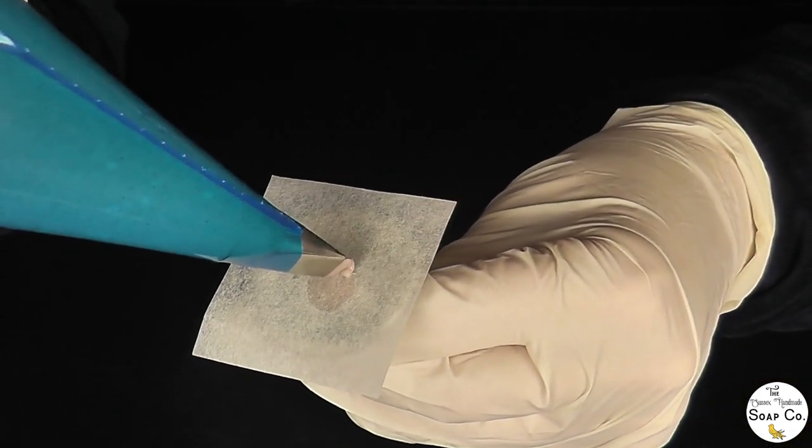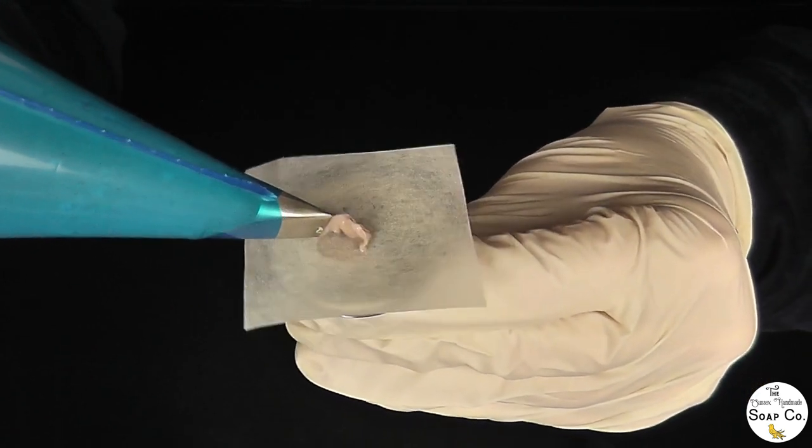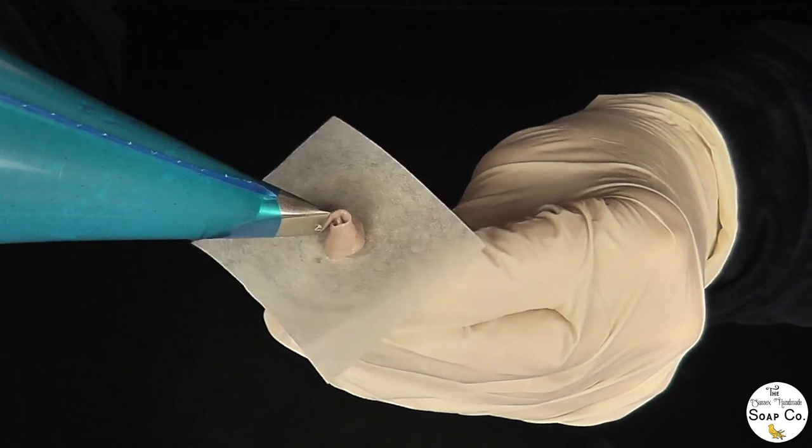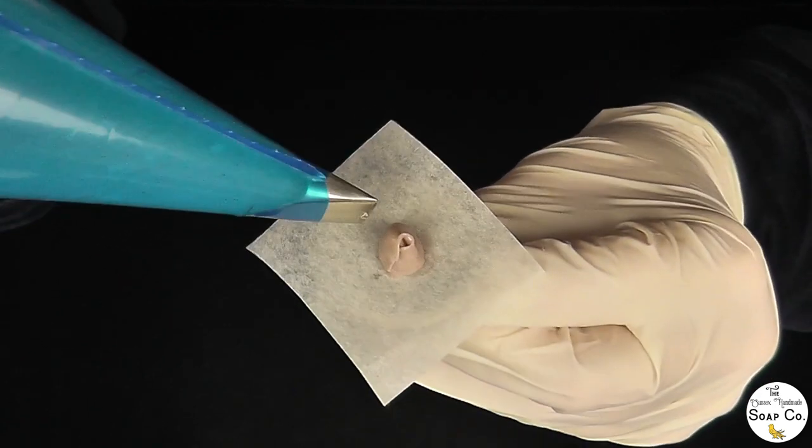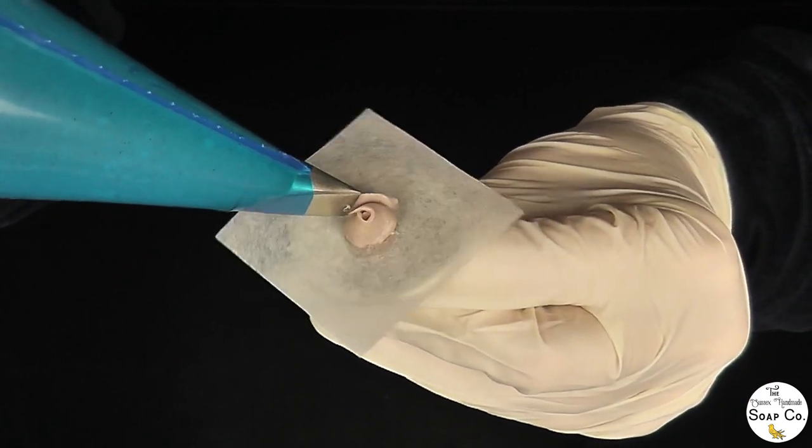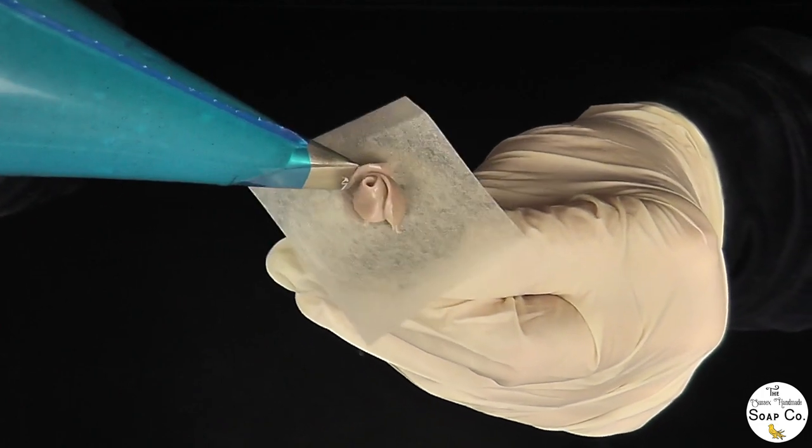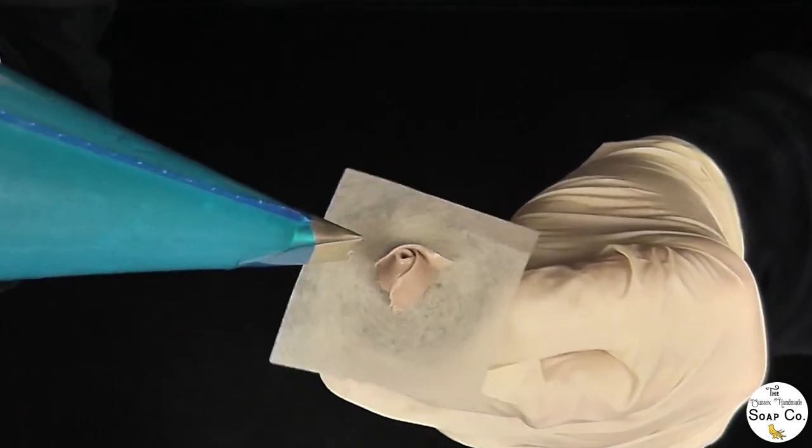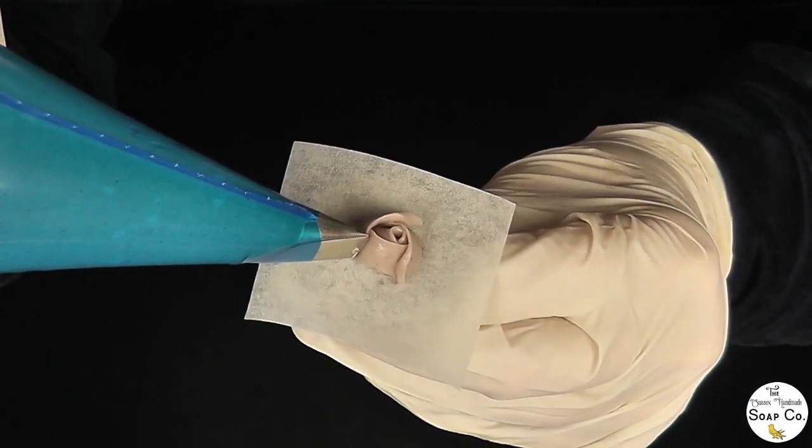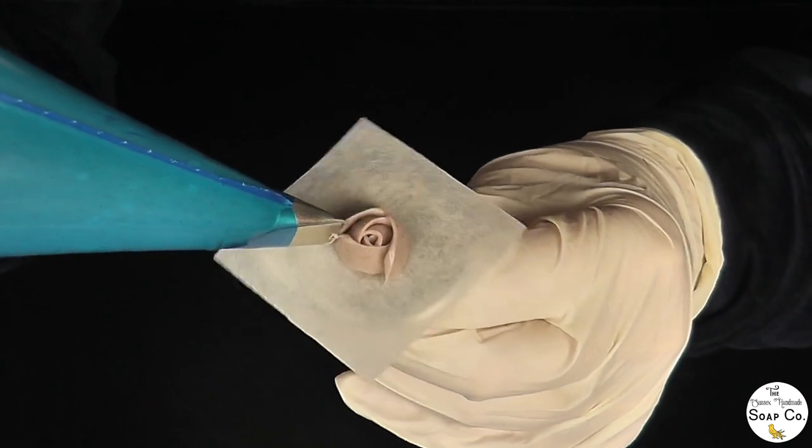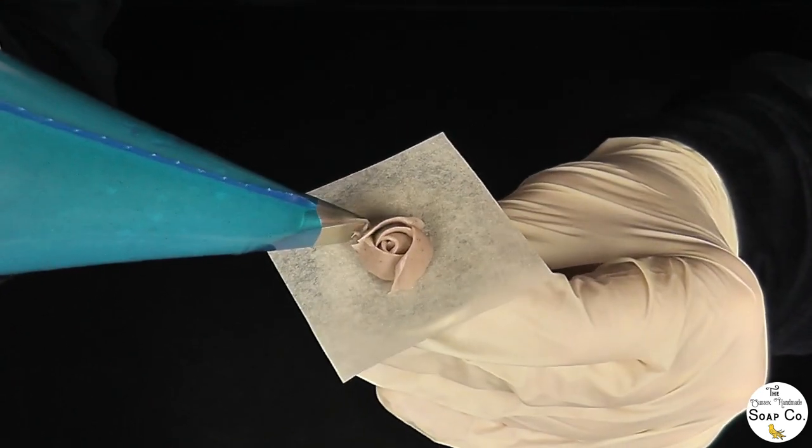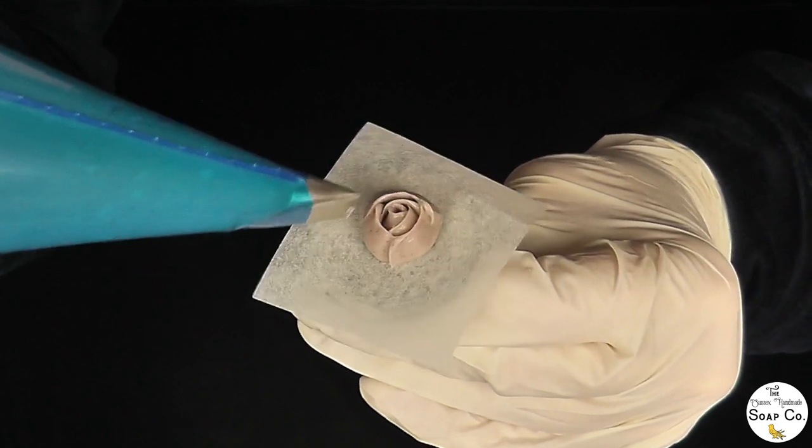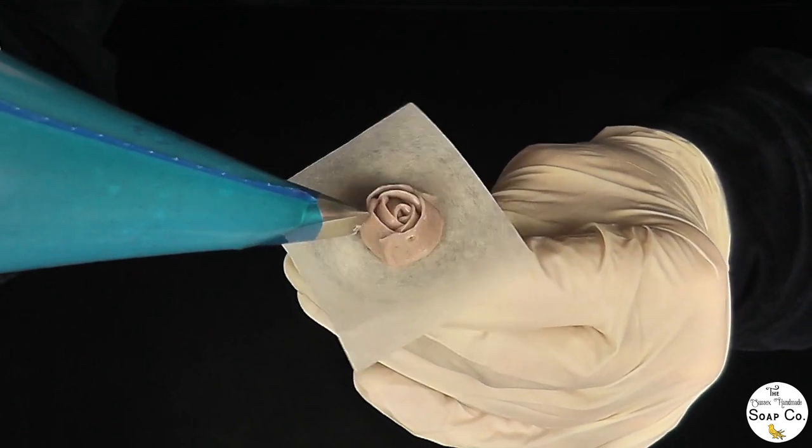So we're going to jump straight into the piping today and the first little succulent I'm creating is the rose succulent. For this I'm using the petal tip number 103 and I've coloured the batter with purple Brazilian clay. The hardest thing about all of the piping I did was actually making sure the batter was at exactly the right consistency. Because too firm and it wouldn't have been able to pipe out of the bag, but too soft and it wouldn't have had the definition that is actually required.